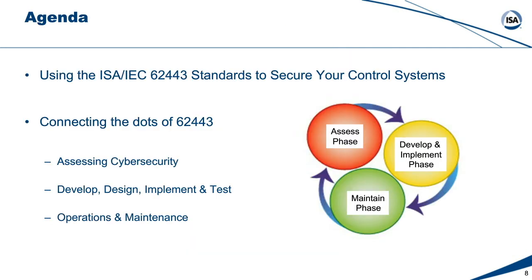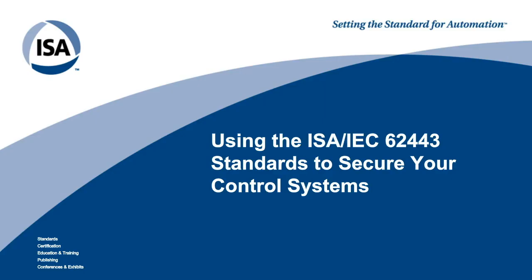The 62443 standards are used to secure your control systems and are set up in different phases: the assess phase, the develop and implement phase, and the maintain phase. We want to connect these dots for industrial automation and control systems. There are a lot of frameworks out there — there's NIST, and different countries have their own frameworks — but we're going to be focusing on 62443.